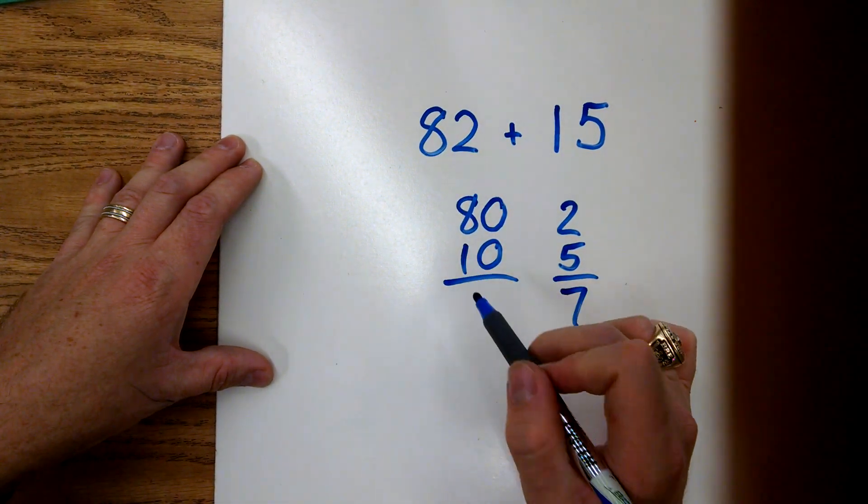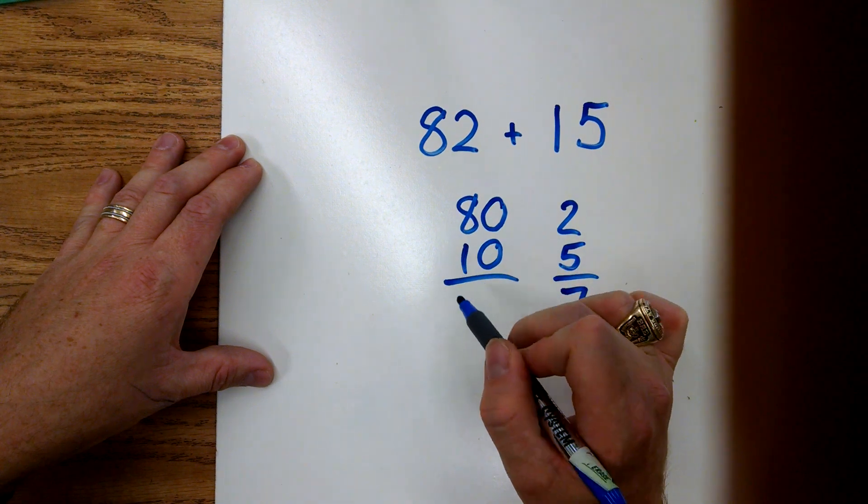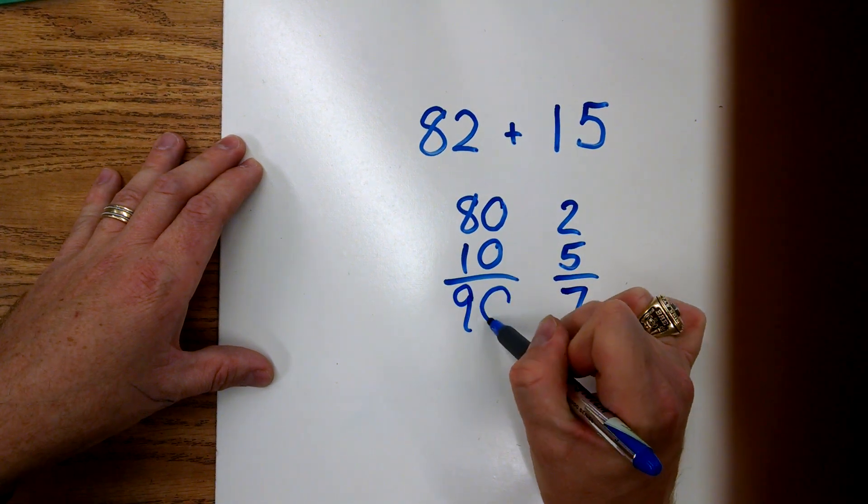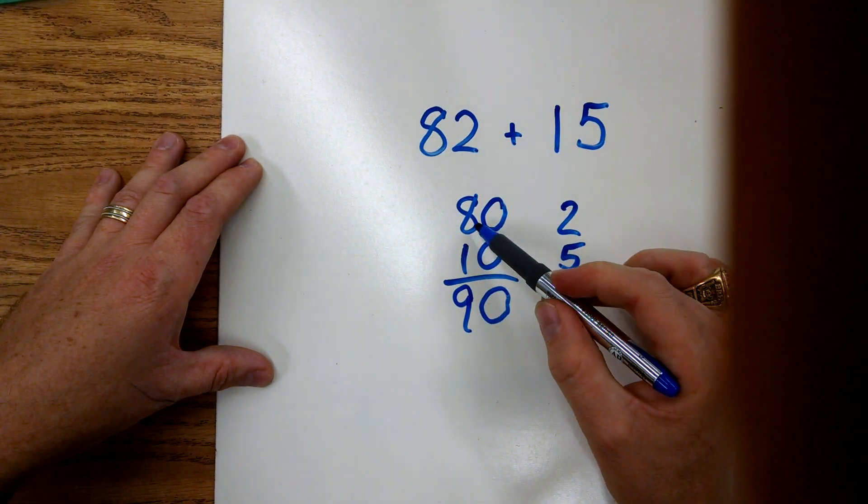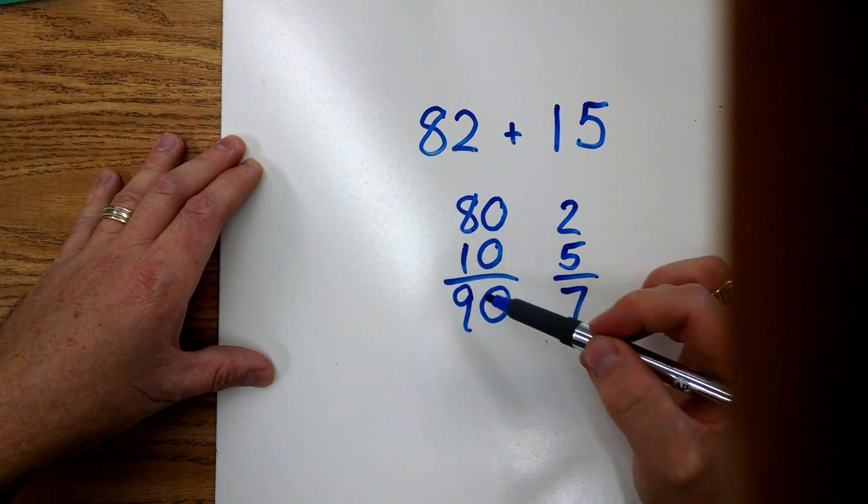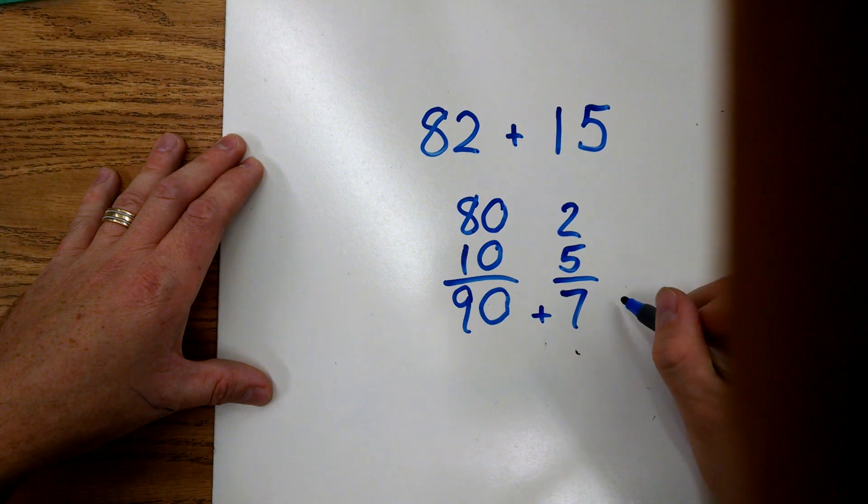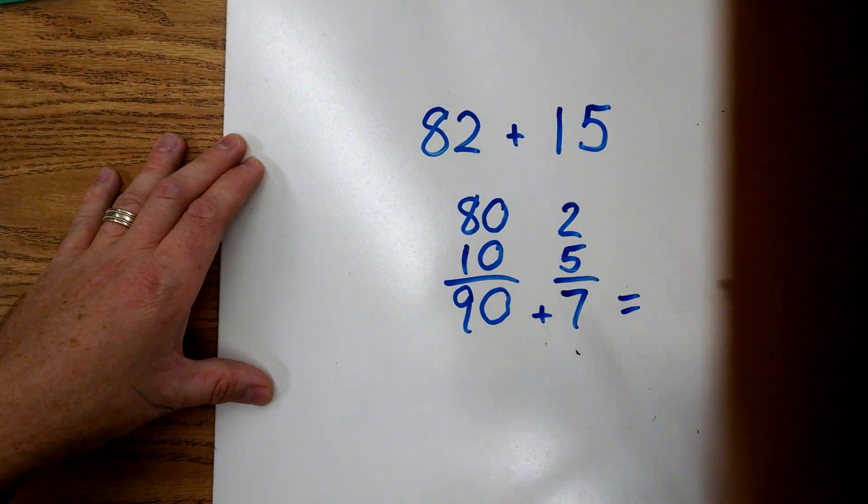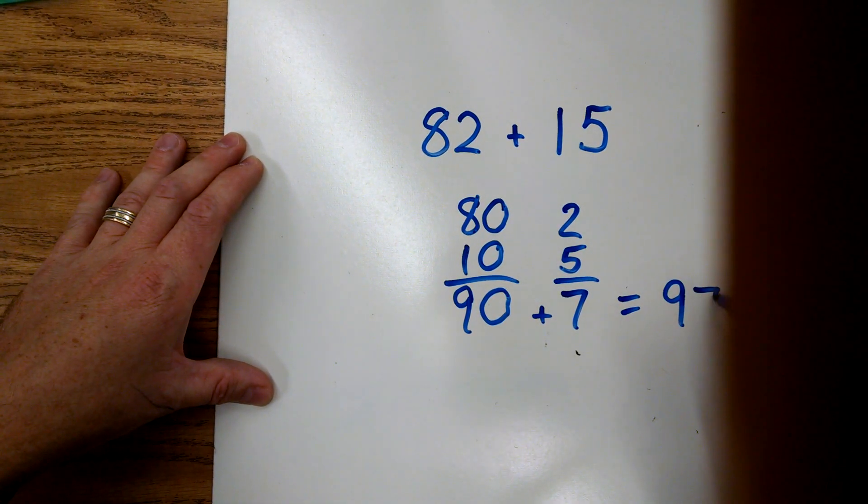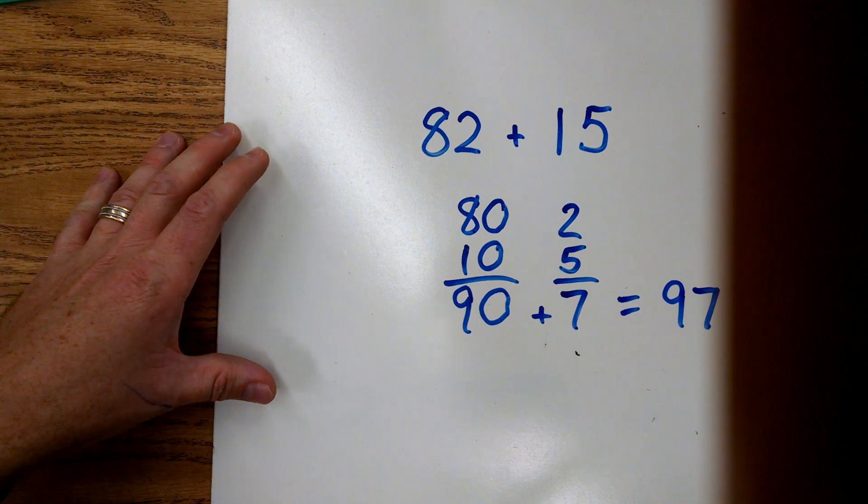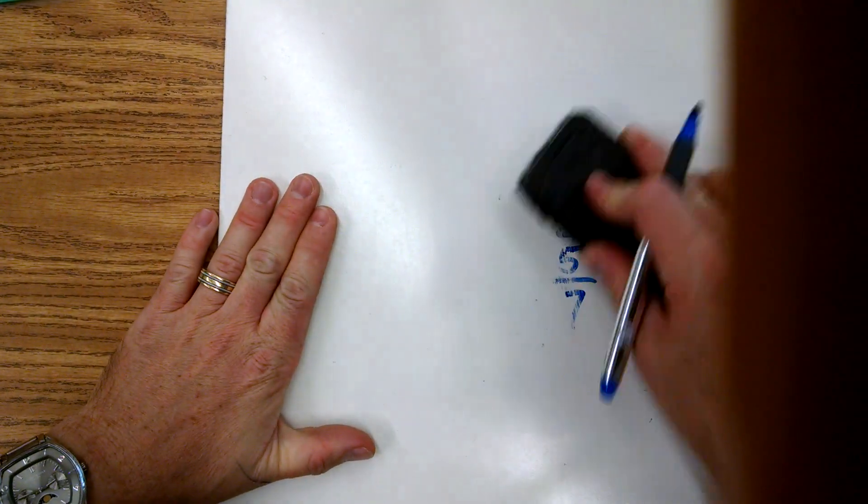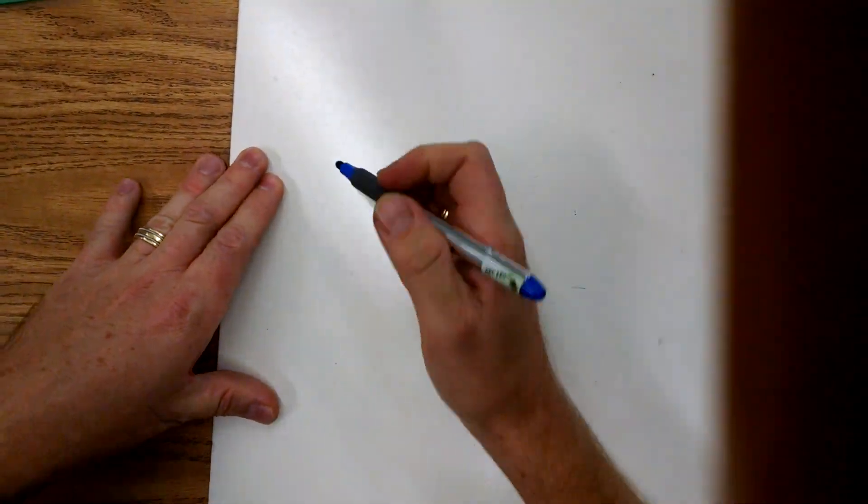Now we're simply going to add our ones. 5 plus 2 is 7. We're going to add our tens. 80 plus 10 is 90. That's easy because if you know your basic facts, 8 plus 1 gives you 9, and just bring your zero down. Now all we have to do is add them back together again. 90 plus 7 is 97.